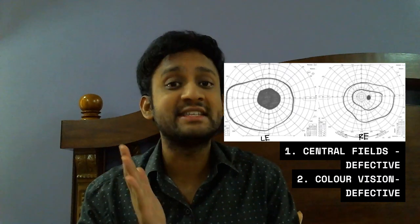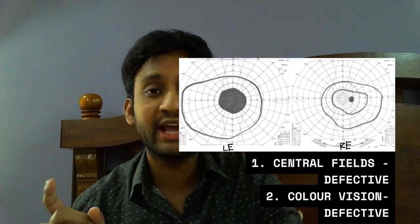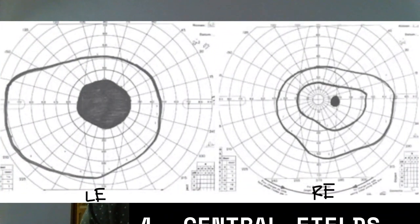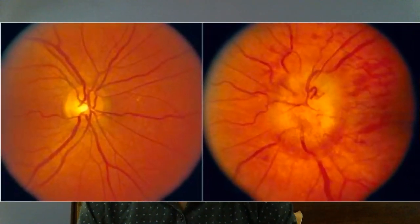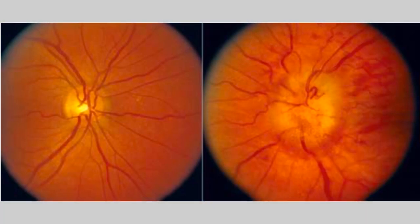The color vision of the right eye is fine, but the left eye is defective — she was not able to read all the plates. Looking at the field of this patient, the left eye shows a central scotoma while the right eye field is normal. Coming to the fundus, the right eye disc is normal, but the left eye optic disc is elevated with blurred margins and a few hemorrhages, indicating optic disc edema.